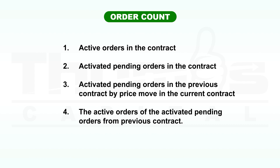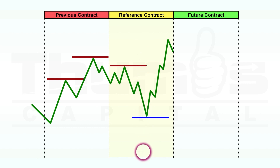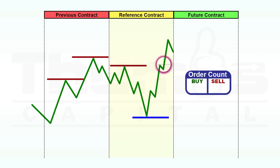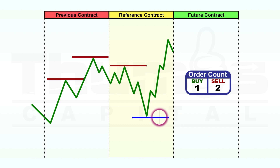For example, in this illustration, this is the current intraweek contract. To determine the accumulation order count, we consider the active orders in the contract first. Here we have a pending and an active sell order. Looking forward, we can see that the price already crossed the pending sell order level, which means that the pending order has been activated — that makes it two active sell orders. Here we have one active buy and one pending buy that was not activated before the end of the contract. So we have two sell and one buy orders within the reference contract. The next step is to check if the price action in the reference contract activated any pending orders in the previous contract.